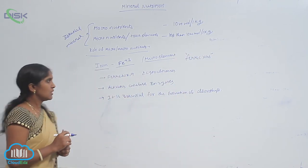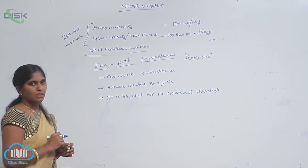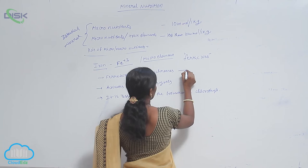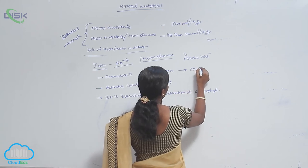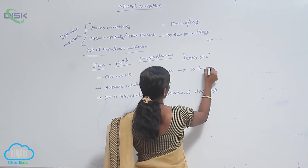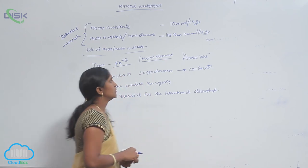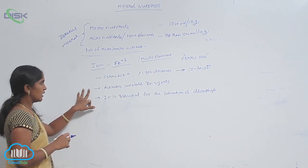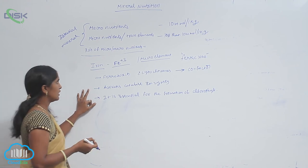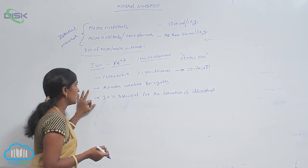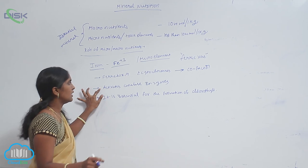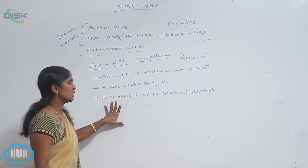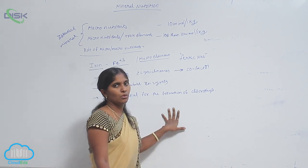You are seeing here peridoxin and cytochromes. The peridoxin and cytochromes have iron as a co-factor. The Fe³⁺ ions are activated in catalytic enzymes and are also essential for the formation of chlorophyll. This is a basic process of chlorophyll.